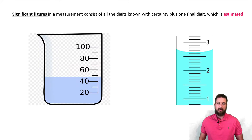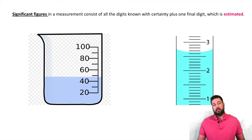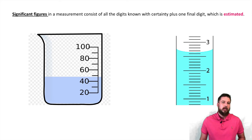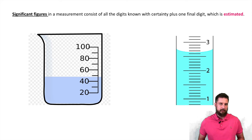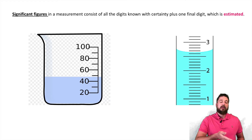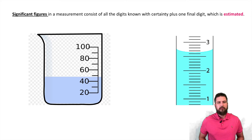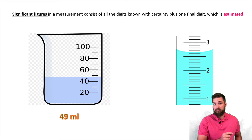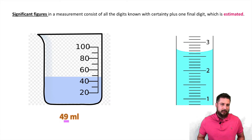Let's take a look at an example. The beaker on the left has some water in it. We record what we know for sure. It's counting by tens, so we can say for sure it's 40 and not 50. We can see it's between 40 and 50, but we don't have a line for the ones place. So we estimate the ones place — because it's pretty close to 50, we can say it's about 49 milliliters. We know for sure it's 40, and we estimated the last digit, which is nine.